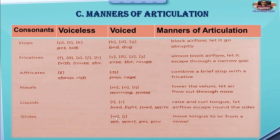Here is another manner of articulation: those are known as glides. Glides are the 'w' sound and the 'y' sound — 'y' as in 'yes' and 'you', and 'w' as in 'we' and 'want'. We move the tongue to or from a vowel position. Such sounds in English are known as glides.